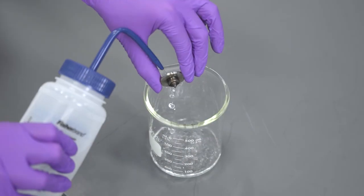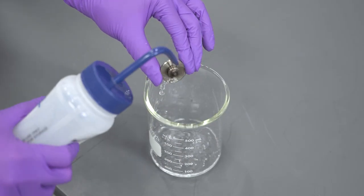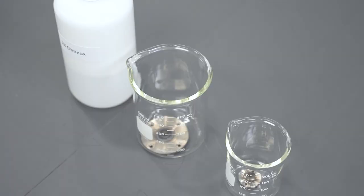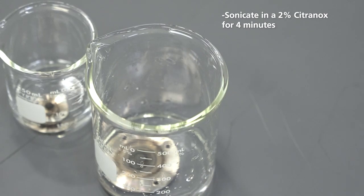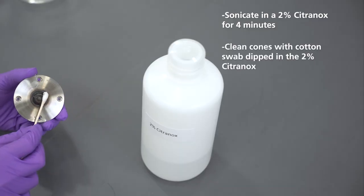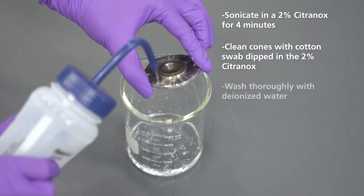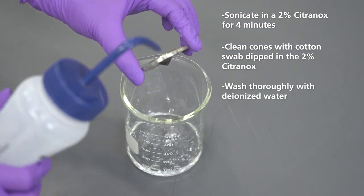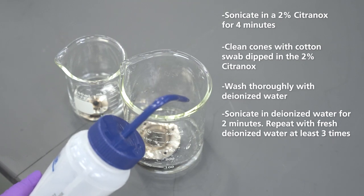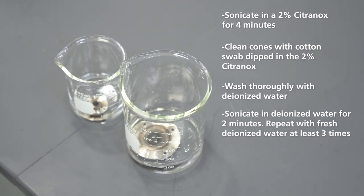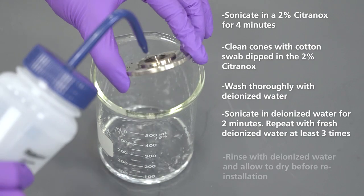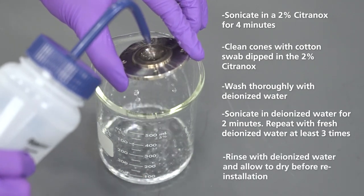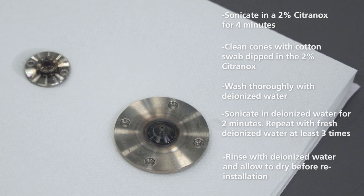For moderate deposit, first rinse the cones with deionized water. Then place the cone in a 2% Citranox solution with the tips facing up. Sonicate for 4 minutes. Clean the cones with a cotton swab dipped in the Citranox solution. Wash the cones thoroughly with deionized water. Place the cones in deionized water and sonicate for 2 minutes to remove any residual Citranox. Repeat this with fresh deionized water at least 3 times. Lastly, rinse the cones with deionized water and allow to dry before reinstallation.